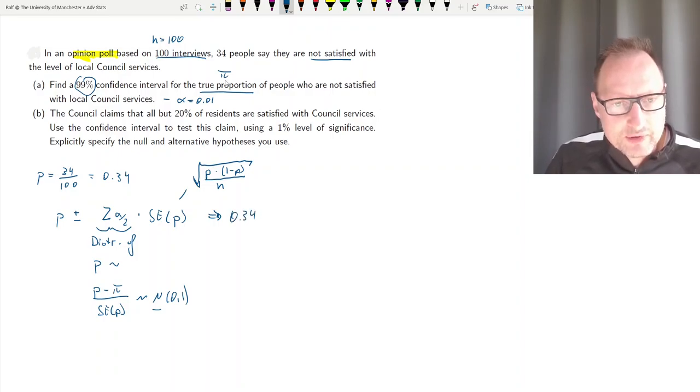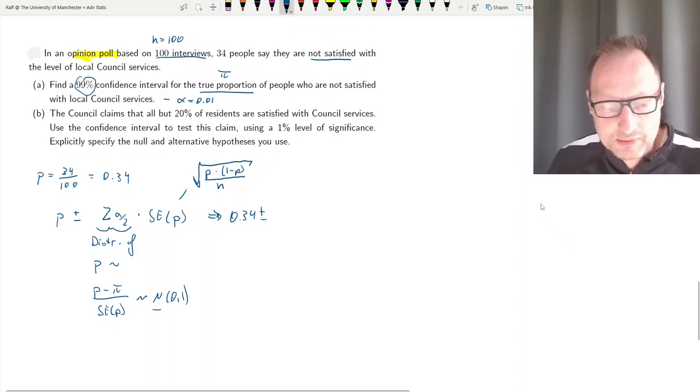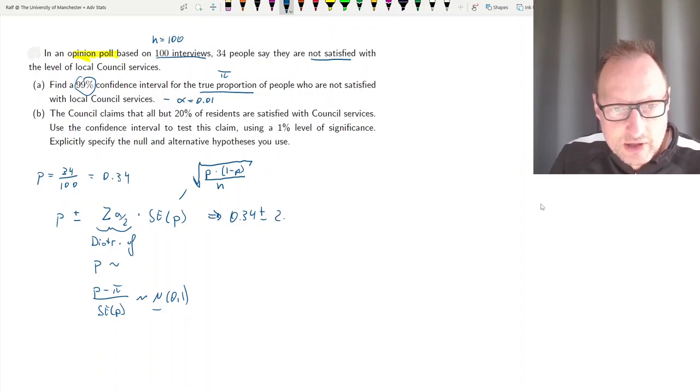All we need to do is plug in our values: 0.34 plus minus. Now what is that z value? We need the z value that cuts off half a percentage point in the tail of a standard normal distribution, that is 2.576, times the square root of 0.34 times 1 minus 0.34 divided by n, which in our case is 100.